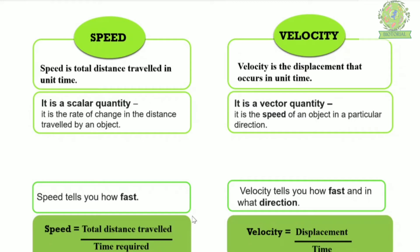Now let's move to speed and velocity — these two terms are not the same. Speed is the total distance traveled in unit time, while velocity is the displacement that occurs in unit time. Speed is a scalar quantity and velocity is a vector quantity. Scalar quantities are always expressed in magnitudes, which means units.